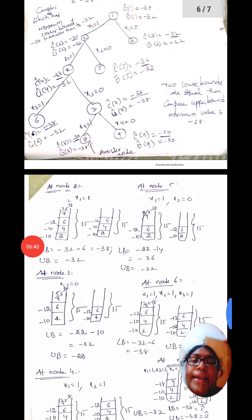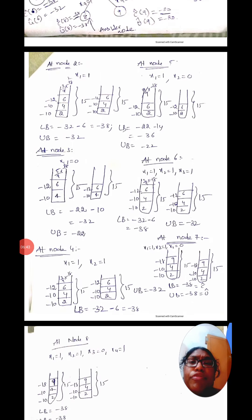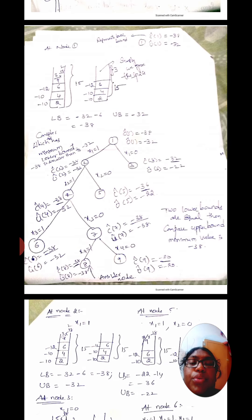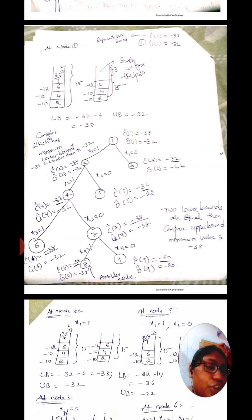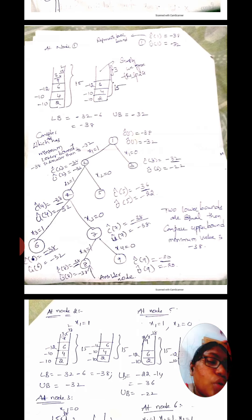At node 1, we check the condition: which node has the minimum lower bound? Minus 38 is smaller than minus 32, so the condition is true and we want to expand the nodes. For the 0/1 knapsack problem, one side is x1 equals 1 and the other side is x1 equals 0. We write down the child nodes.